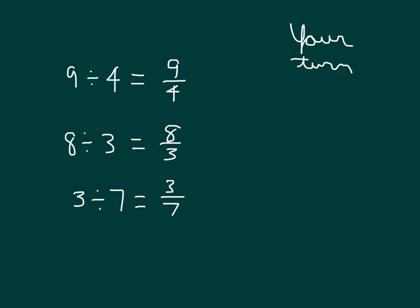Read them with me. Nine divided by four is equal to nine fourths. Eight divided by three is equal to eight thirds. Three divided by seven is equal to three sevenths. So that's division and relating them back to fractions, and fractions relating back to division as well.